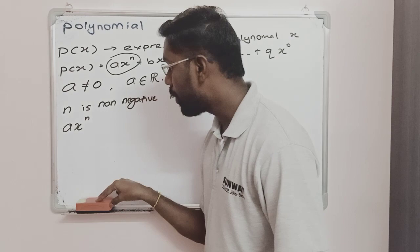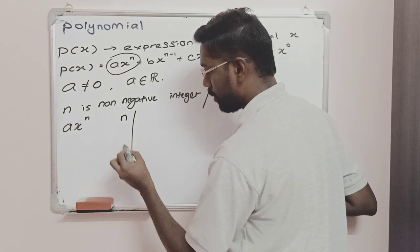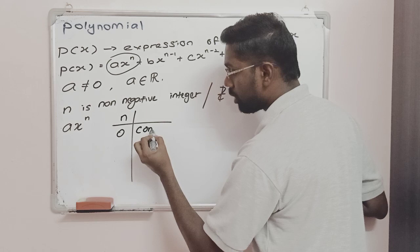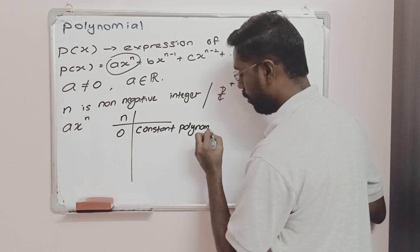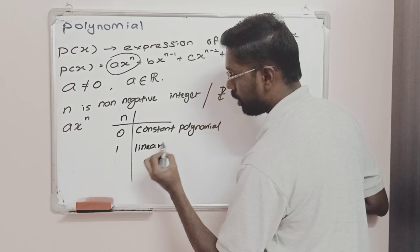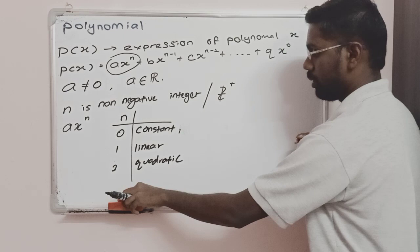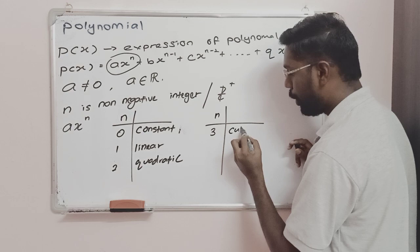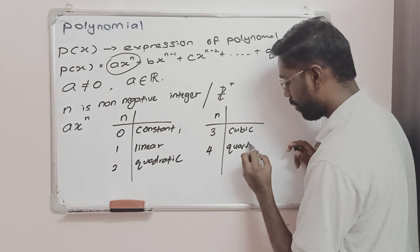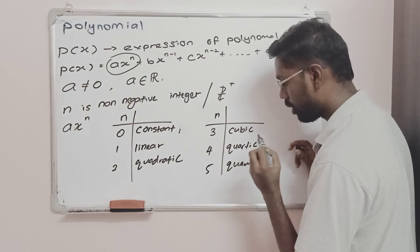Let's look at the specific names for specific values of n. When n is equal to 0, we call this a constant polynomial. When n is equal to 1, we call this a linear polynomial. When n is equal to 2, it is a quadratic. When n is equal to 3, we call this a cubic. When n is equal to 4, it is a quartic. When n is equal to 5, it is a quintic.